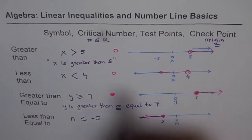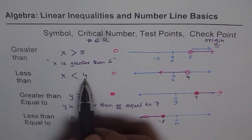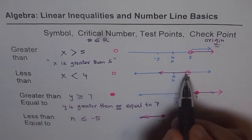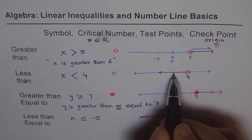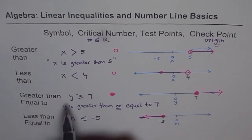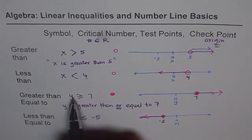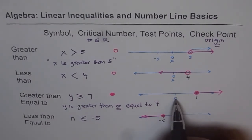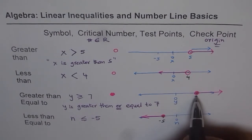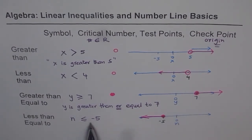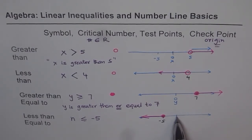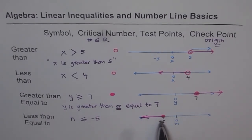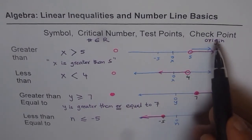For x less than 4: is 0 less than 4? Yes, true — and our solution includes 0, which confirms it is correct. For y greater than or equal to 7: replacing y with 0 gives 0 greater than or equal to 7, which is false, so 0 is not part of our solution. For n less than or equal to minus 5: 0 is less than or equal to minus 5 is false, and our solution points left, so 0 is correctly excluded. All solutions are verified.